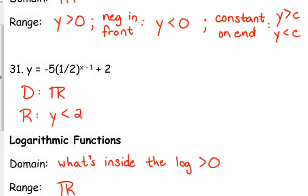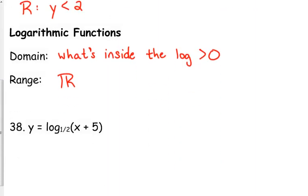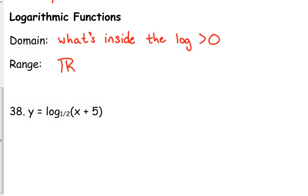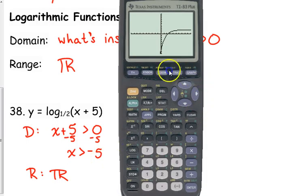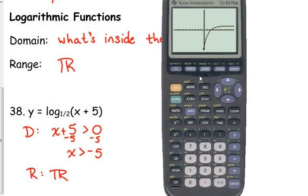So what's inside the parentheses? Not the base, because the base is just going to be a constant. If we're looking at number 38, for example, the domain is going to be what's inside the log: x + 5. We're going to set that greater than zero and solve for x. So our domain is x > -5, and the range is all real numbers.